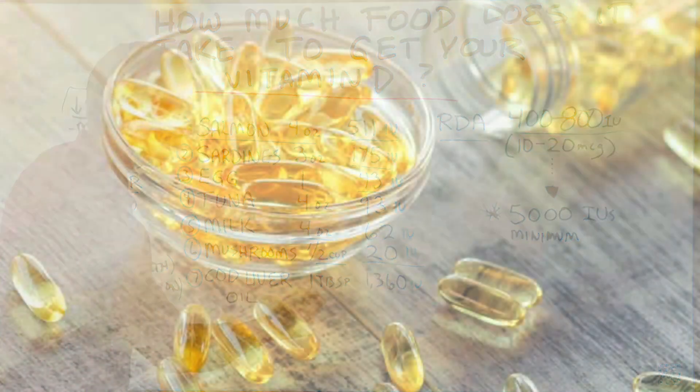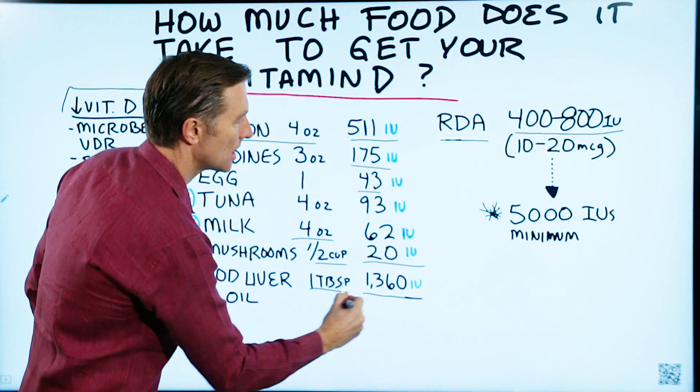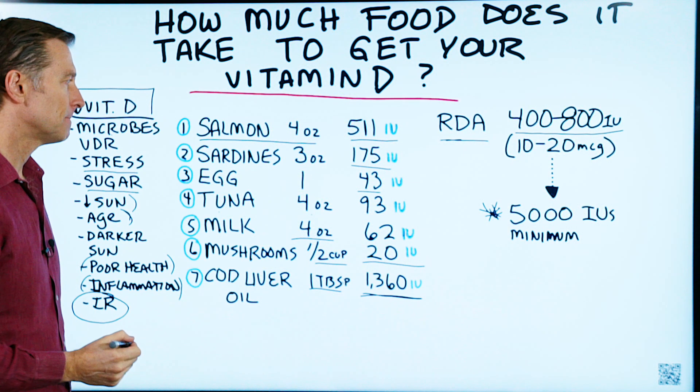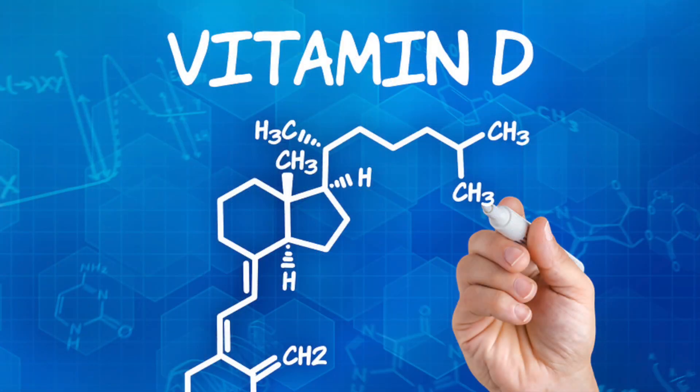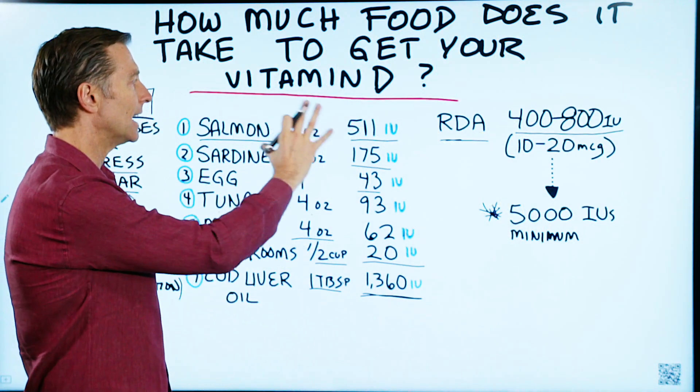Cod liver oil has the most. One tablespoon has 1,360 IUs of vitamin D. So as you can see, these are the foods that are high in vitamin D. So it's virtually impossible or very, very difficult to achieve consuming a diet.